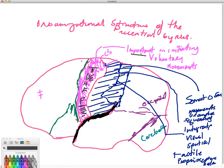So once again, the precentral gyrus is important in initiating voluntary movements.